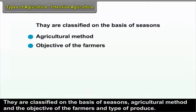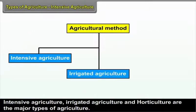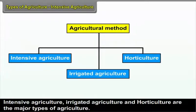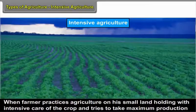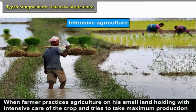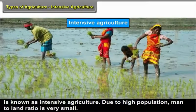There are different types of agriculture, classified on the basis of seasons, agricultural method, the objective of the farmers, and type of produce. Intensive agriculture, irrigated agriculture, and horticulture are the major types. Intensive agriculture is when a farmer practices agriculture on small land holdings with intensive care and tries to take maximum production.